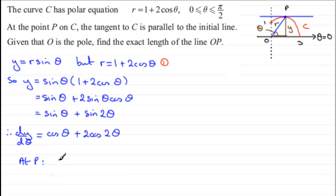So at P, we know that dy by d theta must equal zero. So therefore, if we put our equation to zero, we've got cos theta plus 2 cos 2 theta must equal zero. So it's just a question of solving this equation.